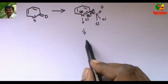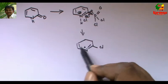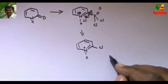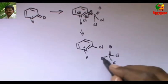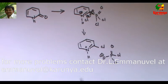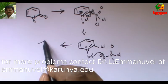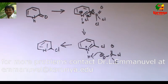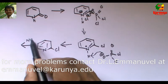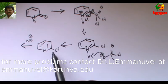Then Cl- attacks here to give this intermediate. In the earlier case the intermediate was stable, but in this case, since it is an aromatic ring, this hydrogen is highly acidic and is taken up by the O- to give chloropyridine. The chloropyridine can be easily attacked by a nucleophile. If the chlorine is in the second position, any nucleophile — whether alcohol or amine — can easily displace it on heating to give the corresponding product.